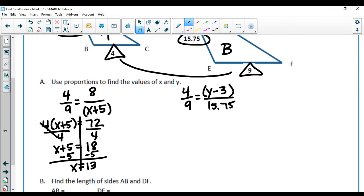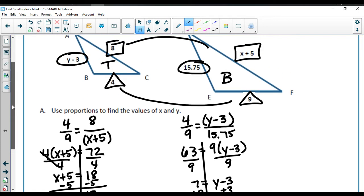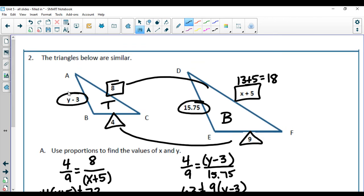Over here again, put that in parentheses. My 4 times 15.75 is going to give me 63 equals 9 times parentheses y minus 3. Divide by 9 on both sides, I get 7 equals y minus 3. Adding 3 to both sides, I get 10 equals y. So x is 13, so over here I have x plus 5, which is 13 plus 5, which is 18. And for my y, I found out 10 was y, and I have y minus 3, so 10 minus 3, which is 7.